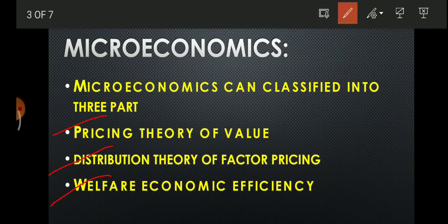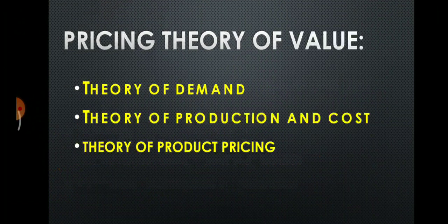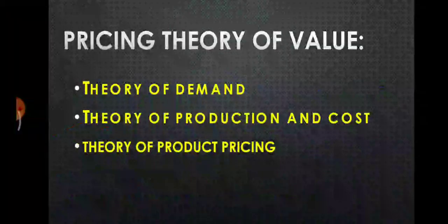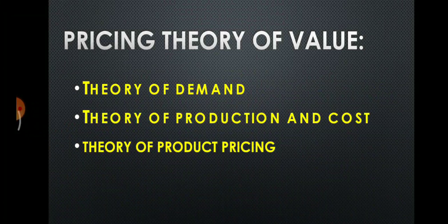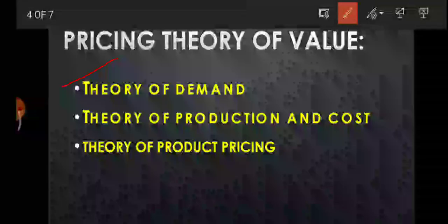I have added only pointers in this PPT, but you will get the full content and explanation from the Manan Prakash book. The microeconomics study is divided into three parts — on a price basis, on a distribution basis, and on a welfare basis. Starting with pricing theory of value, it is divided into three parts: theory of demand, theory of production and cost, and theory of product pricing.